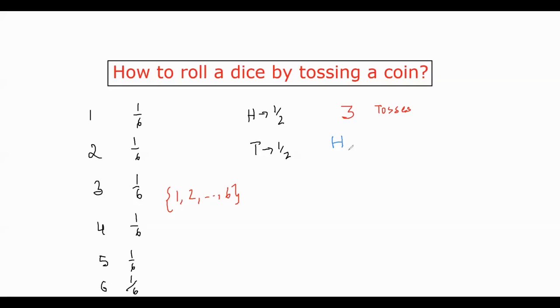H first choice, the first choice, there are two options, H and T. For second choice, there are two options, H and T. The third choice, there are two options, H and T. So in total, there are eight options, right? It's more than six. Good. So let's write it down first.